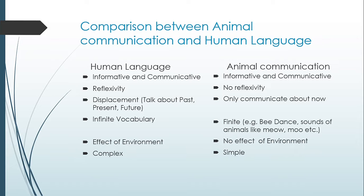This is not the case with animals. For example, if a crow called its companions and they ate the food, they will not talk about the past — like 'yesterday's food was really tasty' — and they cannot predict the future either. This property of talking about past, present, and future is called displacement, and it is a major difference between human language and animal communication.